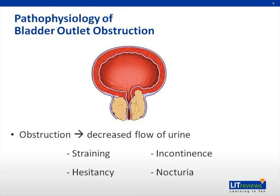Recalling the anatomy of the prostate gland, you can imagine how its growth can lead to obstructive urinary symptoms. Many of the symptoms of BPH, including straining as well as urinary hesitancy — which is difficulty initiating a urinary stream — can be related to obstruction at the level of the bladder neck. In addition, incontinence, which is involuntary leakage of urine, and nocturia, which is waking at night to empty your bladder, are also related to bladder outlet obstruction.